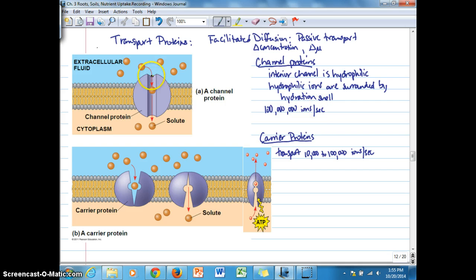That conformational change takes time, so there's a slower process of transport with carrier proteins. Channel proteins, as long as the hydrated ion can pass through the hydrophilic channel, then several can pass through in any given period of time. It requires fewer channel proteins to be synthesized compared to the number of carrier proteins.